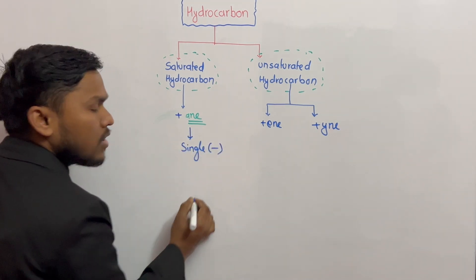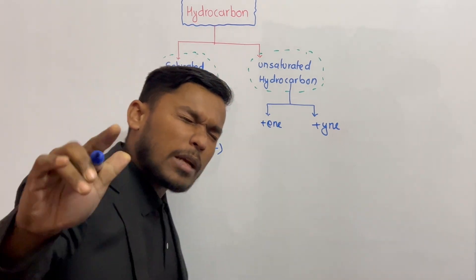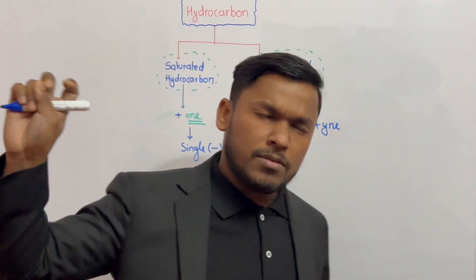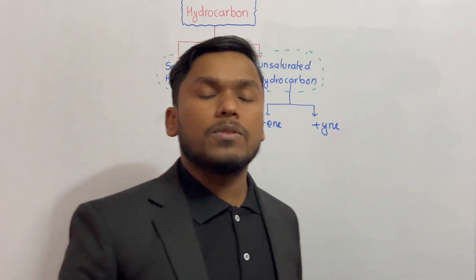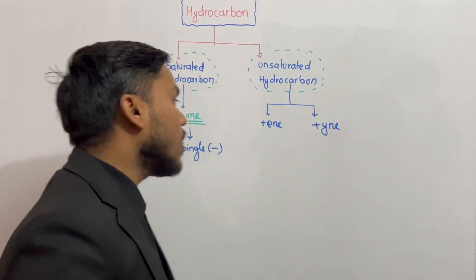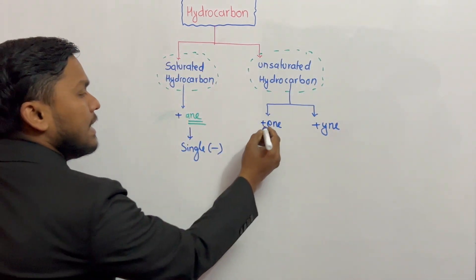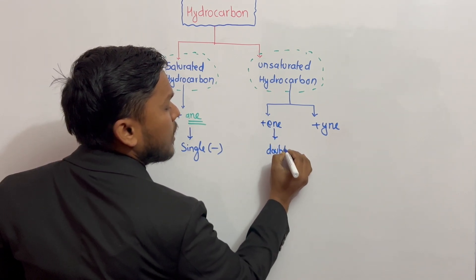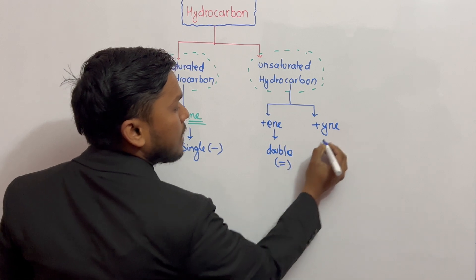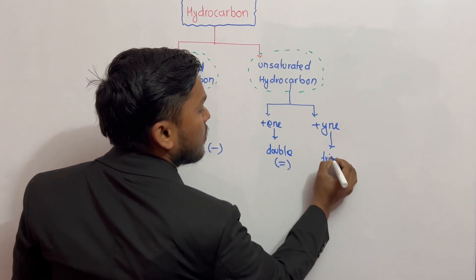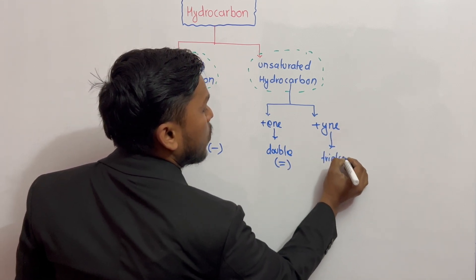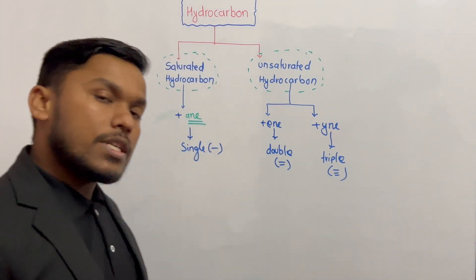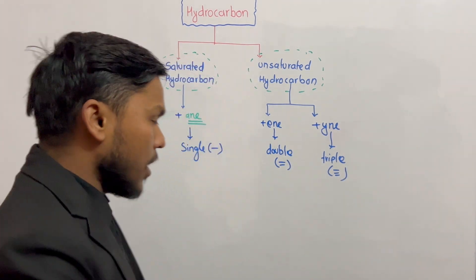When there is a hydrocarbon, there are two basic types. There is a single bond, a double bond, and a triple bond. It is important to know the general formula.